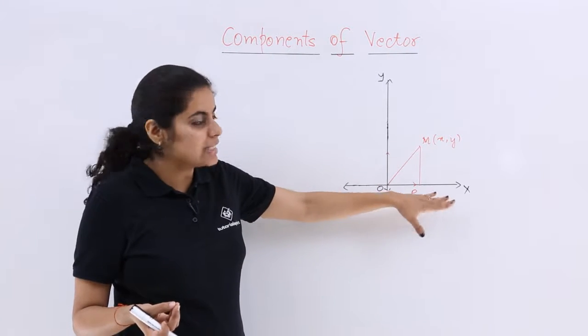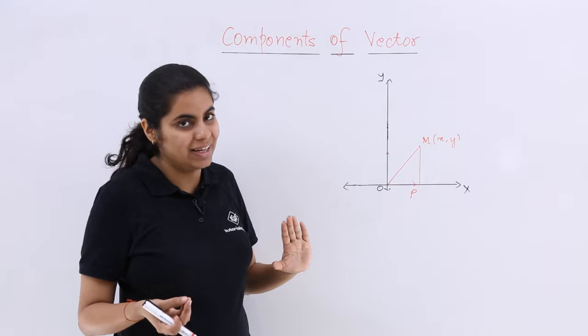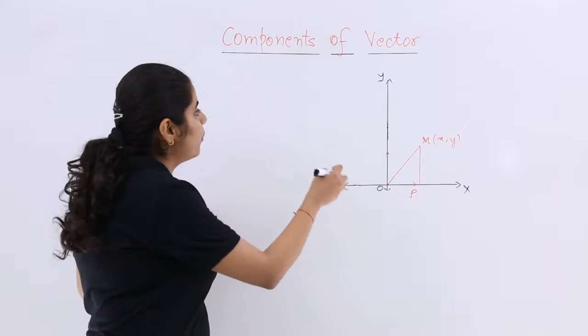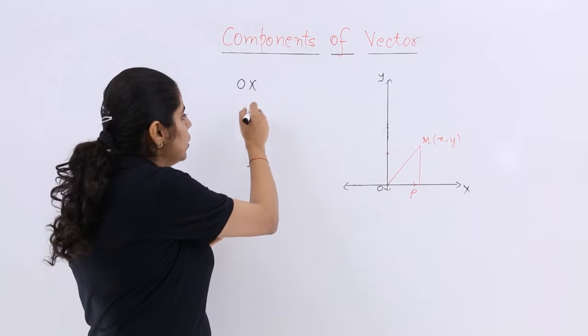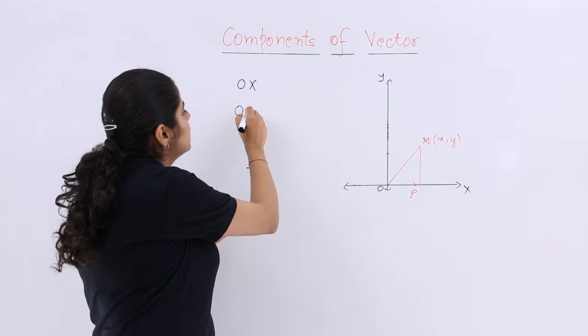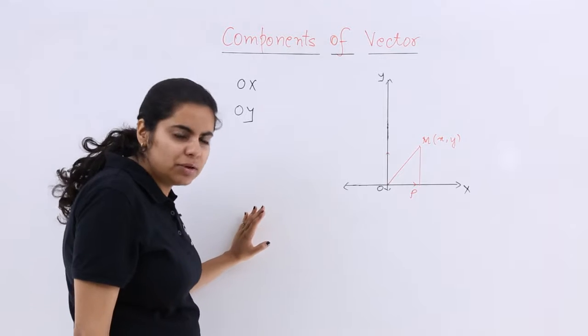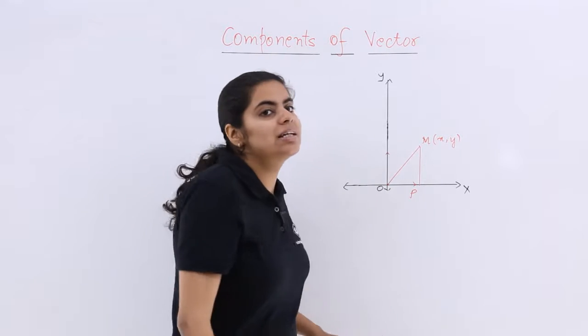So the component along the x axis and the component along the y axis. Now what is the component along the x axis? If I say ox I have to take into picture with regard to x and oy with regard to y, then definitely certain unit vectors will help me.